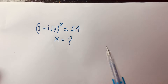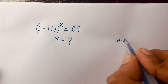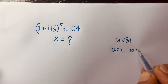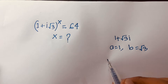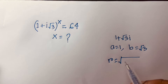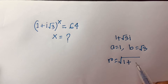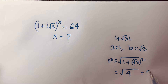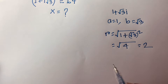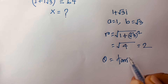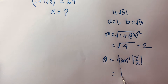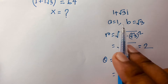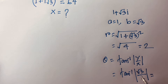So first of all, here we have 1 + √3·i. In this case, a = 1 and b = √3. We know that r = √(a² + b²), so it will be √(1² + (√3)²) = √(1 + 3) = √4 = 2. So r = 2. Now we find θ: it will be tan⁻¹(y/x), which is tan⁻¹(√3/1). That gives us 60 degrees, or π/3.